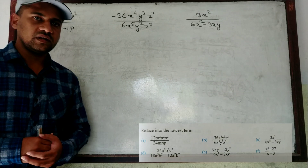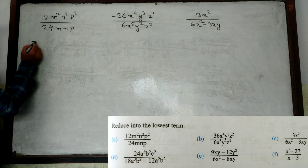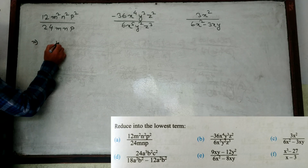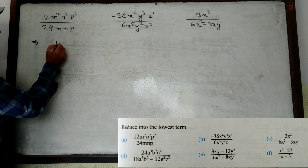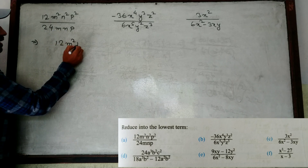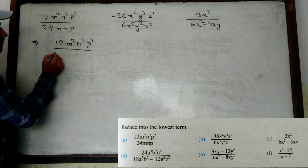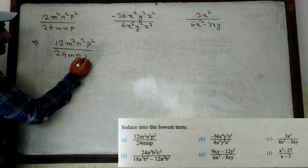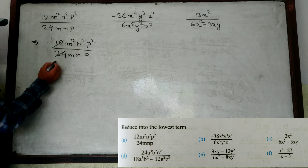Let's take a start. There are three questions on the board. First of all, I am going to solve these three questions and then the remaining three. Look here properly. We have to reduce into lowest terms. So first of all, write down the question — don't cancel in the question directly. First question: 12M²N²P² divided by 24MNP.